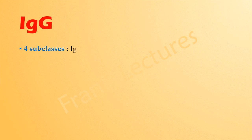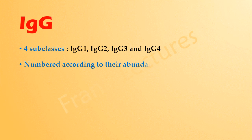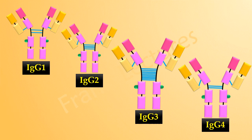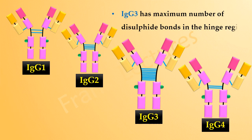This class of antibodies in humans is divided into four subclasses: IgG1, IgG2, IgG3, and IgG4, numbered in order of their abundance in serum, so IgG1 is the most abundant. These subclasses are 90 to 95% similar to each other, varying in their heavy chain composition and the arrangement and number of disulfide bonds. IgG3 has the maximum number of disulfide bonds in the hinge region, and in fact, the hinge region of IgG3 is the longest.